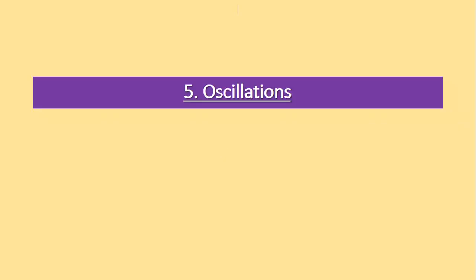In today's lecture we start Chapter 5: Oscillation. Oscillatory motion means to-and-fro motion. We can consider a few examples: the motion of the needle of a sewing machine is oscillatory motion, and the motion of the bob of a simple pendulum is oscillatory motion. The weightage of this chapter is seven marks with option, so it is a very important and high-weightage chapter from your board exam point of view.